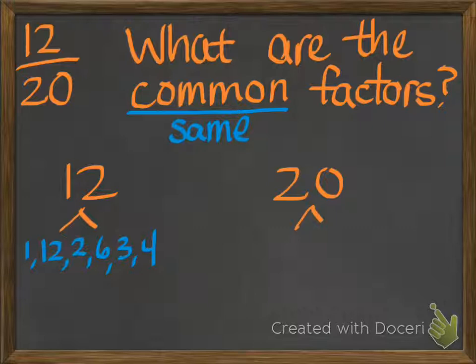Now let's think about the numbers you can multiply together to get 20 — the factors. 1 times 20 is 20. 2 times 10 is 20. 4 times 5 is 20. And those are the only numbers that you multiply together to get 20. 6 does not multiply into 20. 7, 8, and 9 do not go into 20.